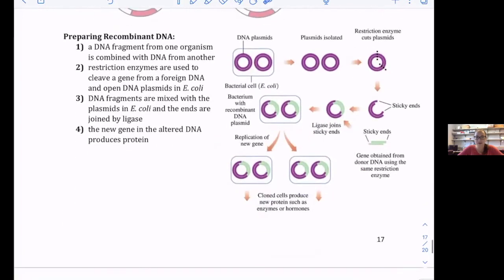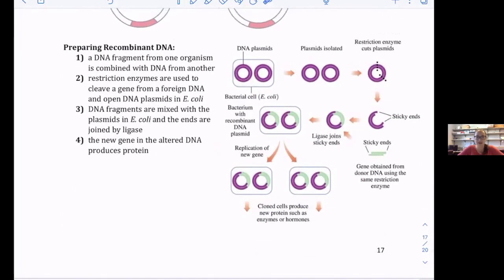How do we prepare this? A DNA fragment from one organism is combined with DNA from another. Restriction enzymes are used to cleave the gene from a foreign DNA and open the DNA plasmid in E. coli.